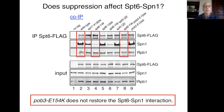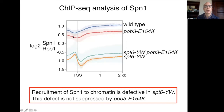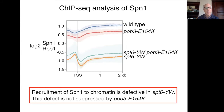Olga also asked what happens to Spt1 association with chromatin by Spt1 ChIP-seq. In a metagene plot, wild type shows clear Spt1 enrichment; in SPT6-YW this is very low; and in the double mutant it is also very low. So we learn two things: recruitment of Spt1 to chromatin is defective in SPT6-YW, meaning SPT6 is required for that recruitment — but that defect is not suppressed by the Pob3 mutation.